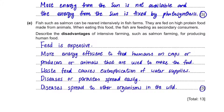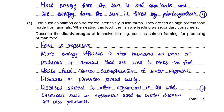Fish farmers will use chemicals like antibiotics in their farms, and these chemicals are often pollutants that are not safe for the environment. So: chemicals such as antibiotics used to control diseases are also pollutants. Lastly, you can mention animal welfare — the salmon do not get to enjoy the ocean and live a normal life — and you will still get a point for that.